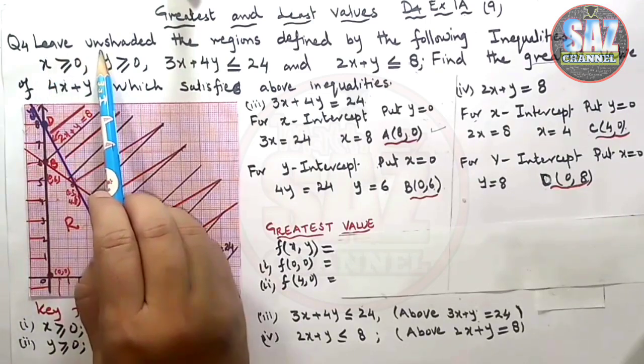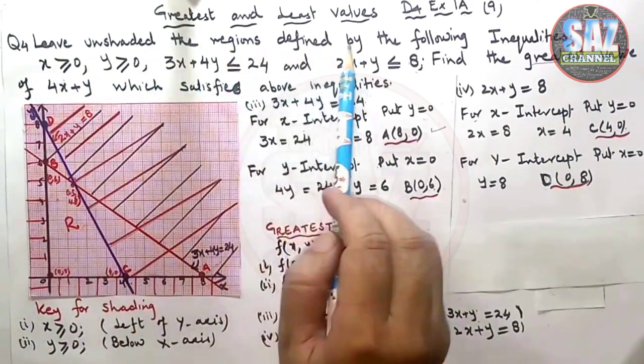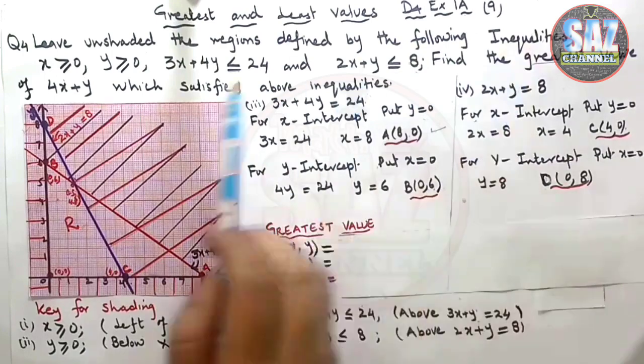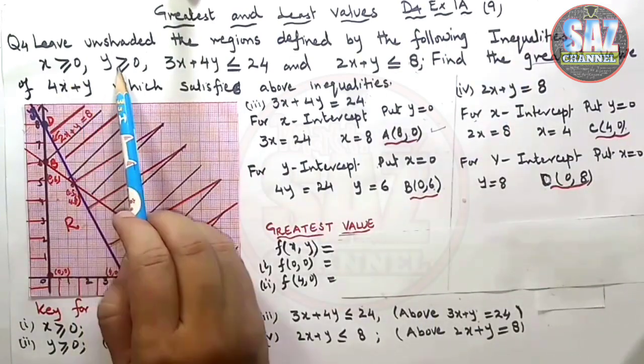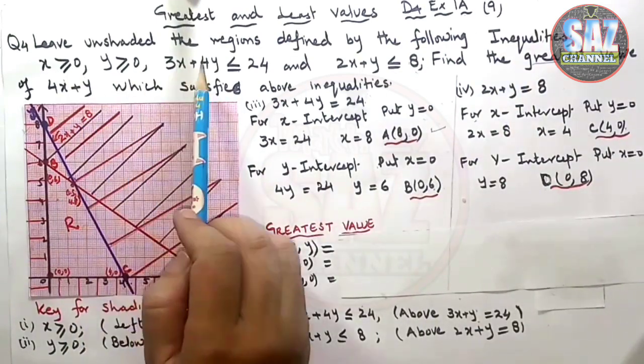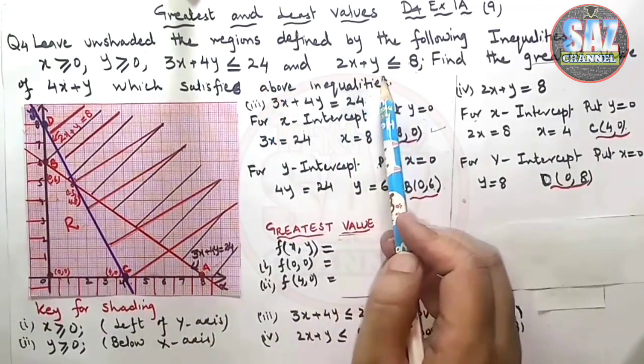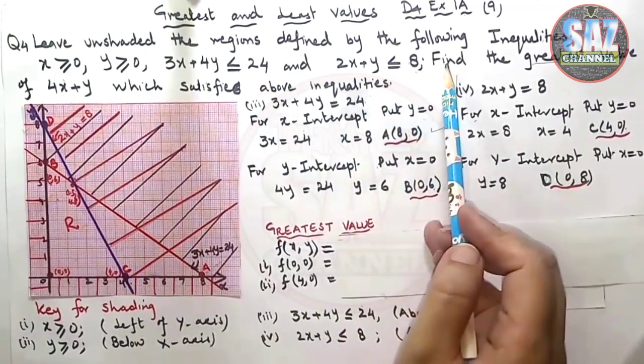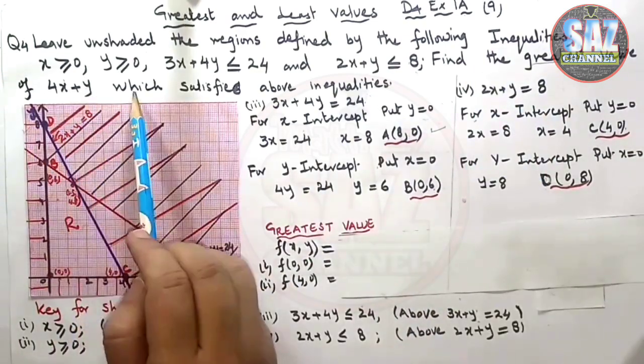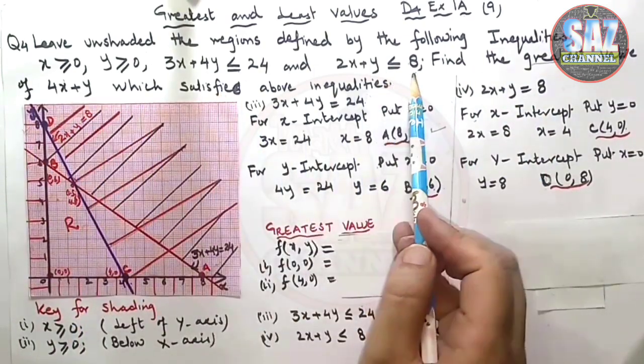Question says leave unshaded the regions defined by the following inequalities: x ≥ 0, y ≥ 0, 3x + 4y ≤ 24 and 2x + y ≤ 8. Find the greatest value of 4x + y which satisfies above inequalities.